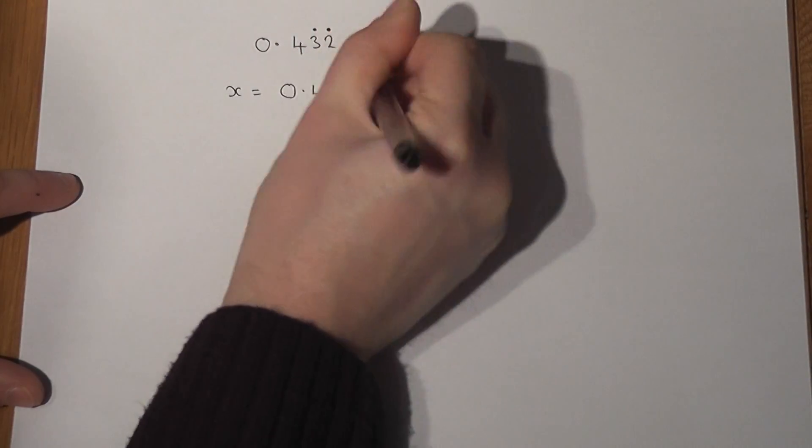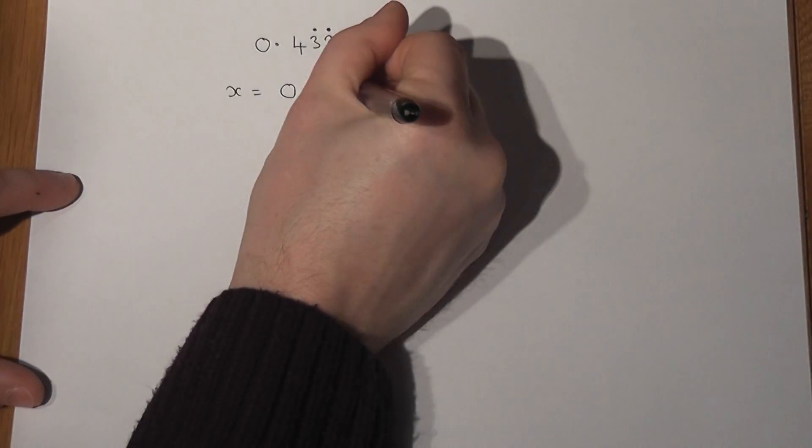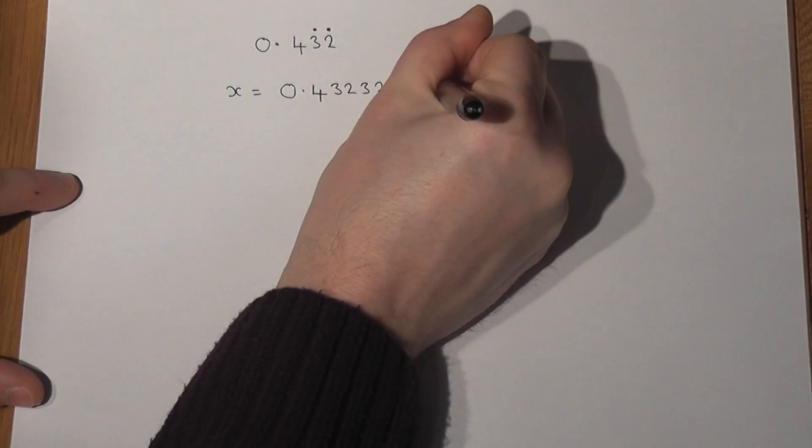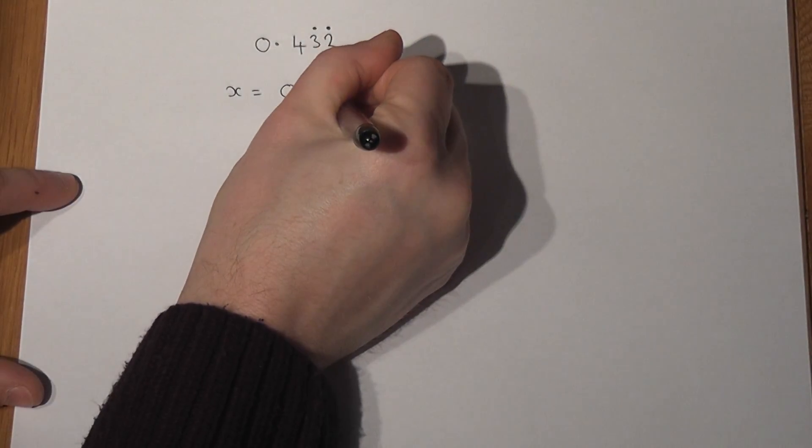So 0.4, the 3 and the 2 now are recurring. And I circled the recurring part.